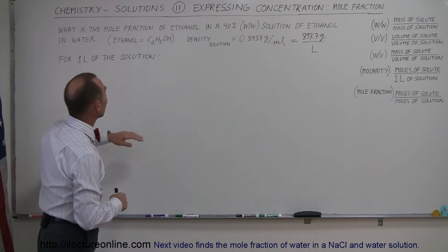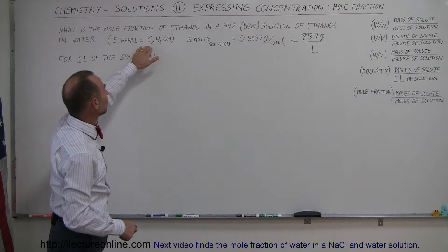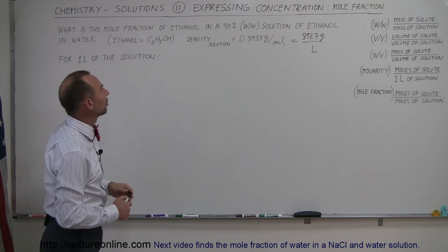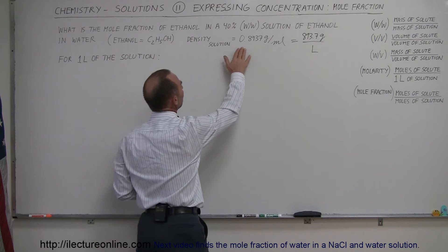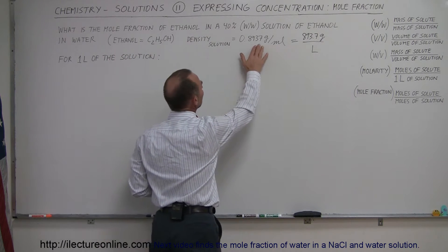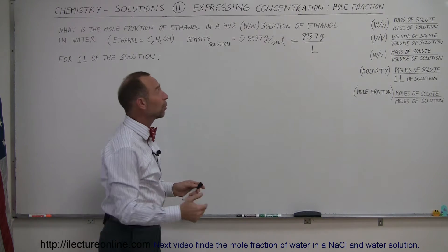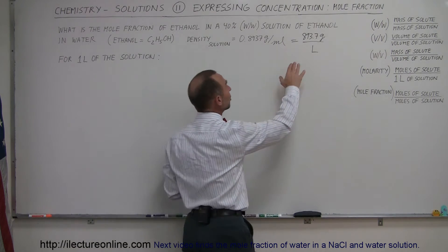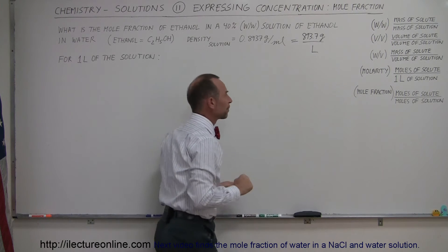We're given that ethanol is C2H5OH, and that the density of the solution is 0.8937 grams per milliliter. Converted to liters, that would be 893.7 grams per liter.